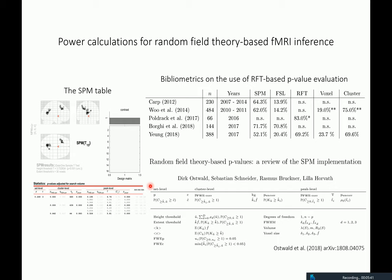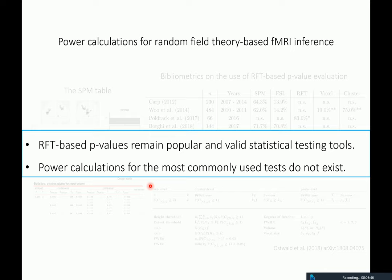What about power? If you look into the literature, you don't find much. The bottom line is that random field theory-based p-values remain popular and valid statistical testing tools. If you look closely at what followed after Eklund, the main issue is about the cluster-forming threshold. But if we want to calculate power for tests based on random field theory, there is not much around — specifically for things like cluster extent, power calculations do not exist. So I decided to develop a power framework for that.